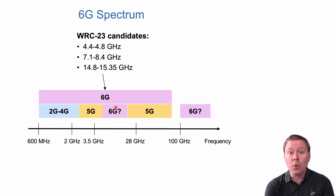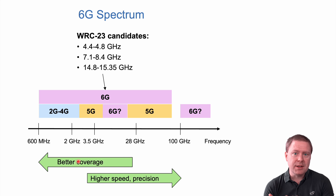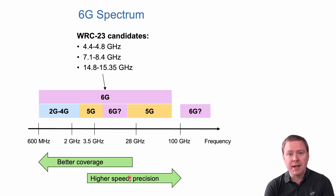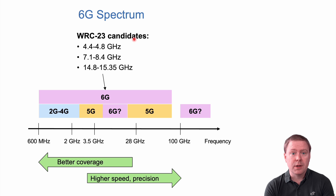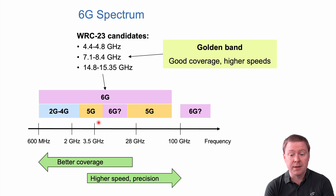We can still use all spectrum allocated for 4G and 5G also in 6G, so it will be deployed across many frequency ranges depending on the operator's choice. At lower frequencies we typically have better coverage as signals propagate further; at higher frequencies we get better speed, better precision in sensing and localization. There are always trade-offs, which is why you deploy base stations of different kinds. The 7.8 GHz band seems to be a golden band — offering rather good coverage but also higher speed than in today's 5G networks, which are predominantly deployed in the 3.5 GHz band.